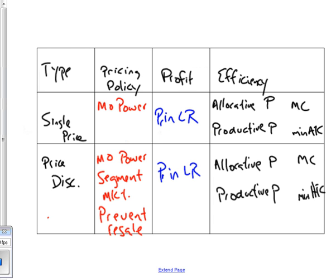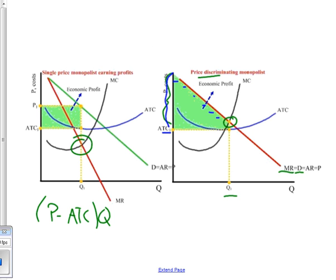But finally, the last way to look at this is whether or not these firms are efficient. Monopoly is definitely not allocatively efficient, nor is it productively efficient. Their price is above ATC, and their price is also above MC. So they are not efficient at all.